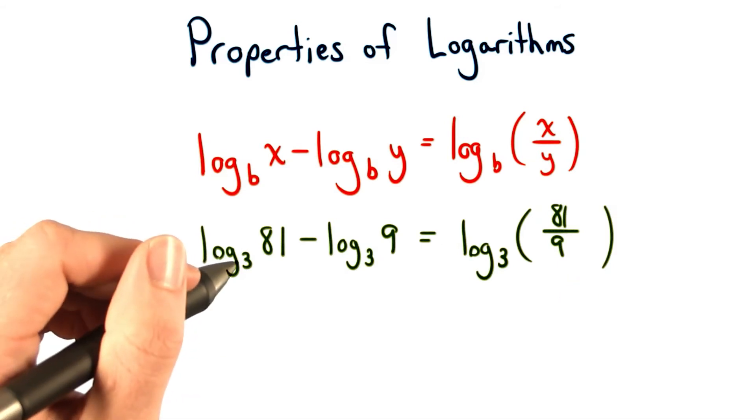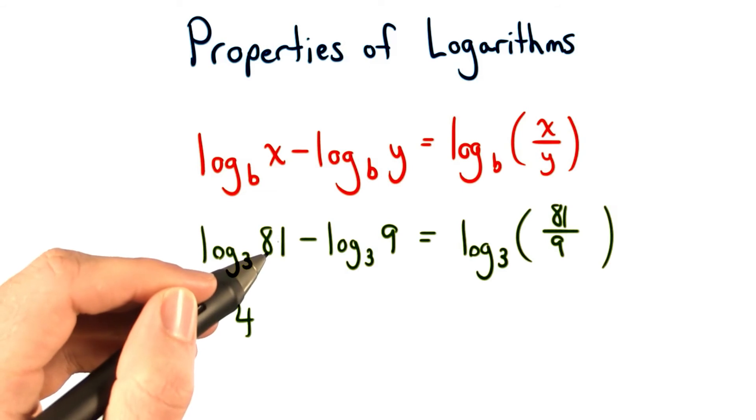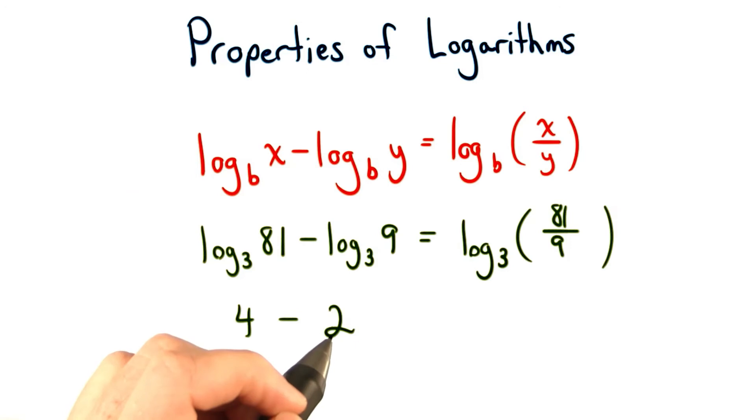We know the log of base 3 of 81 equals 4, since 3 to the fourth equals 81. We also know the log of base 3 of 9 equals 2, since 3 squared equals 9. And finally,